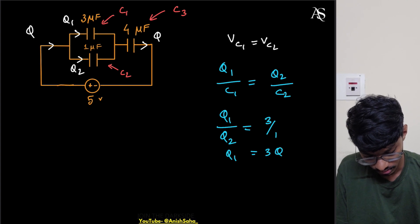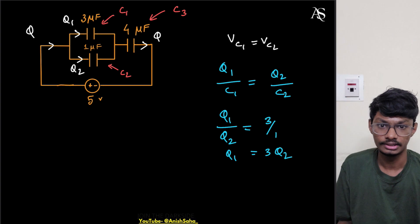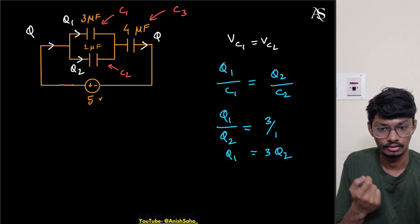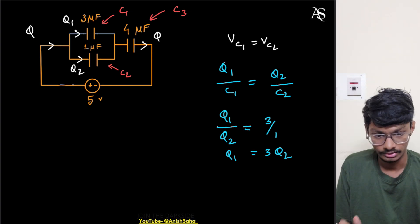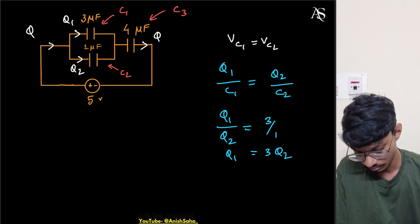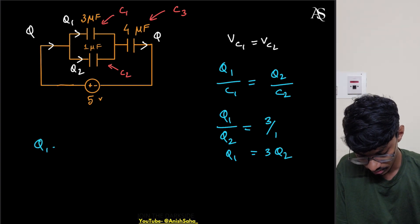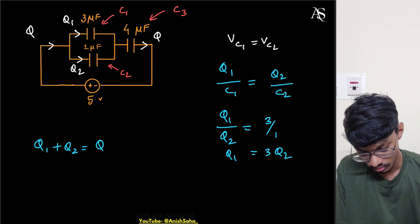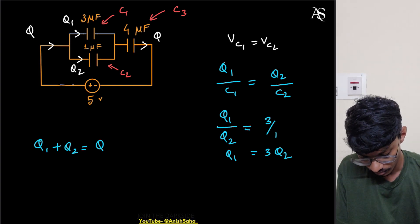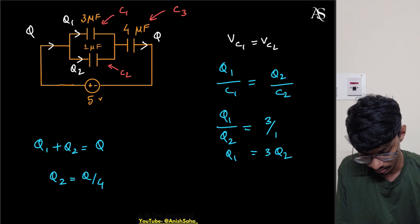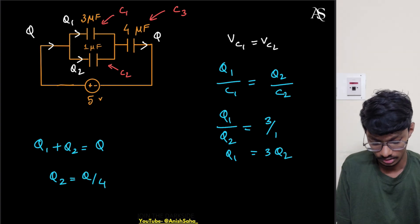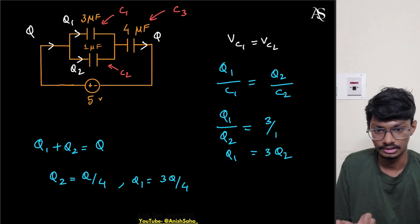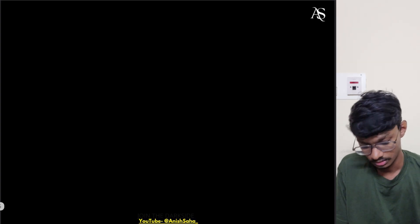So q1 equals 3·q2. Now we can write KVL across the whole loop to find the value of q. Before that, let's relate q1 and q2 to the overall charge q. Since q1 equals 3·q2 and q1 plus q2 equals q, we get q2 equals q/4 and q1 equals 3q/4.